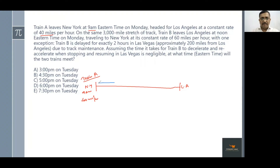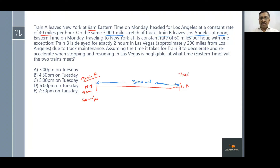The stretch from New York to Los Angeles is 3000 miles — that's what is given. Train B leaves Los Angeles at noon Eastern Time on Monday. Noon Eastern Time is nothing but 12 PM. So Train B is heading from Los Angeles to New York, started at 12 PM, going at 60 miles per hour.